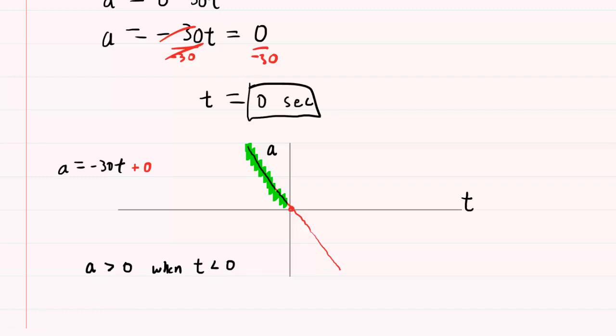And then for the region highlighted here, we can see the acceleration values are negative. So then we can say the acceleration would be less than zero, or negative, when time is greater than zero.